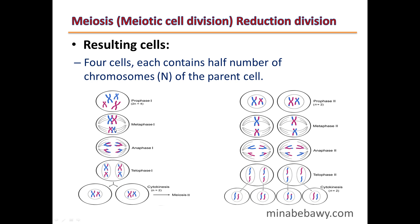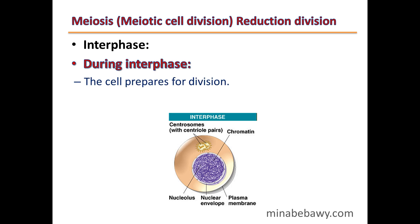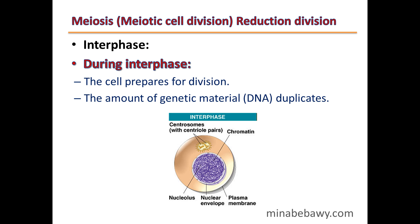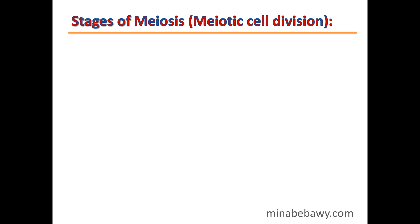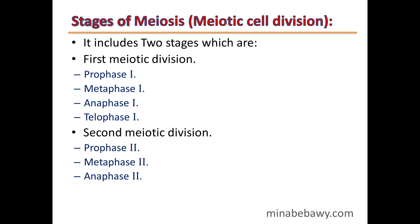As you can see, meiosis has two stages, and produces four cells each containing only half the number of chromosomes. Before meiosis, the cell undergoes interphase in which it prepares for division and the DNA is duplicated. Meiosis includes two stages: the first meiotic division — containing prophase 1, metaphase 1, anaphase 1, and telophase 1 — and the second meiotic division — containing prophase 2, metaphase 2, anaphase 2, and telophase 2.